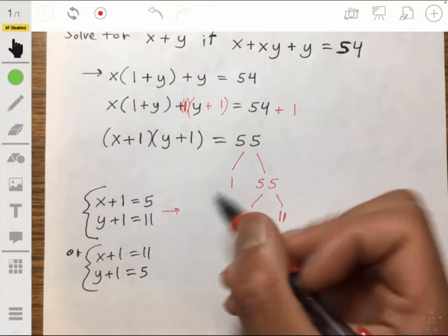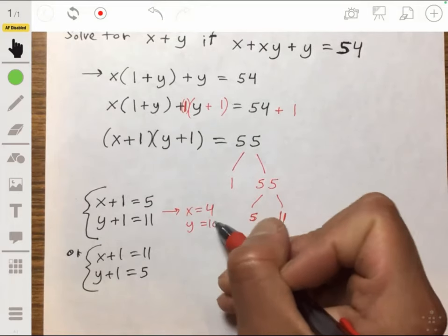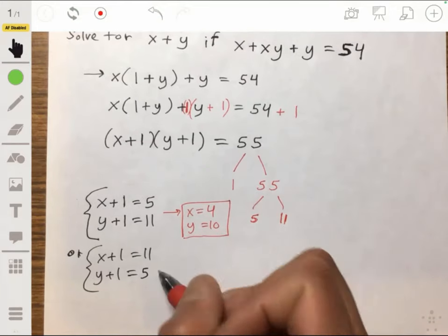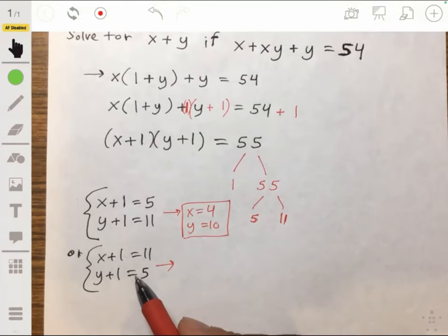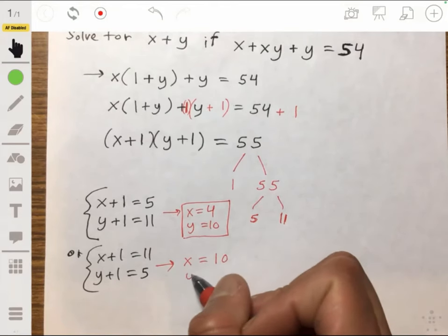Solving this for x and y, we would have that x is 4 and that y is 10. And solving this, it would just be the other way around. It'd be that x is 10 and y is 4.